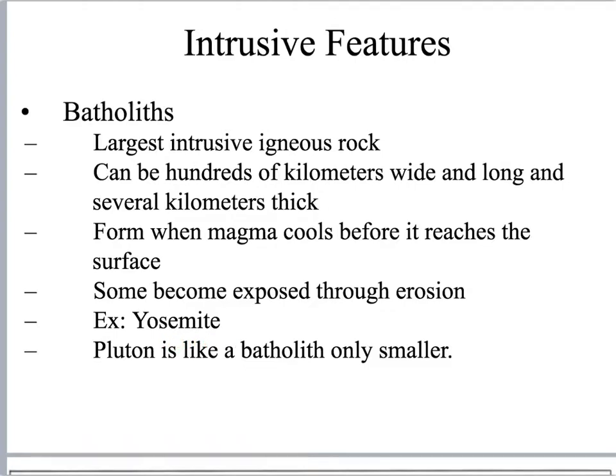One example is Yosemite National Park. This whole national park is one large batholith, and it's pretty much all granite. Plutons can be a piece of the batholith. They typically look like a balloon that is on top of the batholith — maybe finding a weak layer in the rock and able to make it farther towards the surface, but not all the way up to the top.